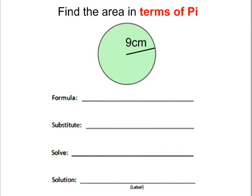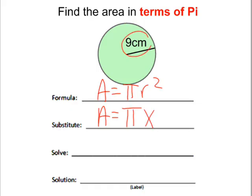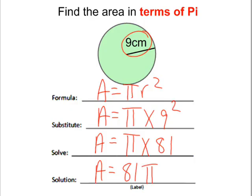Let's do a couple quick examples finding area in terms of pi. Start with our formula and substitute in. When you're solving in terms of pi, you don't substitute for pi. Our radius is 9, and we're going to square our radius — so it's pi times 81. The area of this circle in terms of pi would be 81 pi centimeters squared.